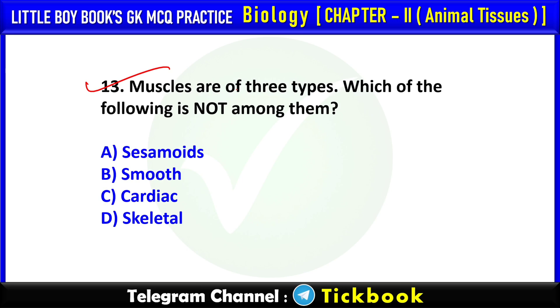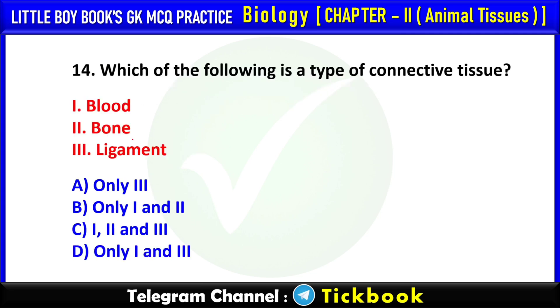Q13. Muscles are of three types. Which of the following is not among them? Option number A: Sesamoids.